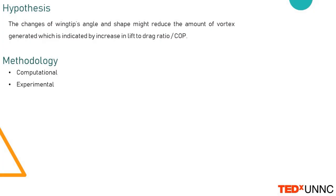So my hypothesis is that changes of wingtip angle and shape might reduce the amount of vortex generated, which is indicated by an increase in lift-to-drag ratio, or COP — coefficient of performance.